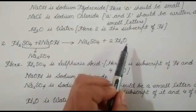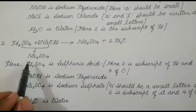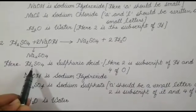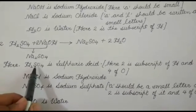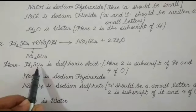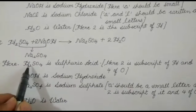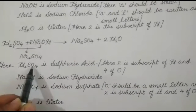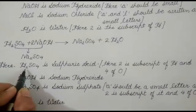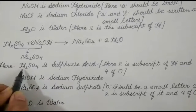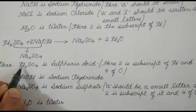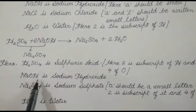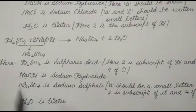While writing the chemical formula of sulfuric acid H₂SO₄, you need to write all the letters in capital. The two should be a subscript of H and four should be a subscript of O. This subscript means we are going to use two atoms of hydrogen and four atoms of oxygen. For sodium hydroxide, A should be a small letter.